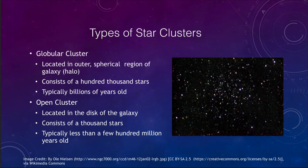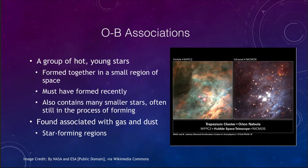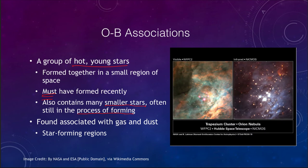Another type is what we call OB associations. These are even younger than young open clusters — a group of very hot, young massive stars that have formed together. We know they must have formed recently because they contain stars that only live a million years or sometimes even less. They also form many smaller, low mass stars which are still in the process of forming. Just as a star lives longer at lower mass, it also forms more slowly — so when stars begin to form from a cloud of gas and dust, the most massive stars form first, and OB associations are therefore associated with active star-forming regions.